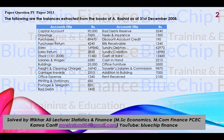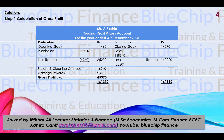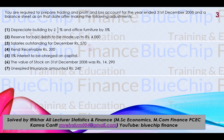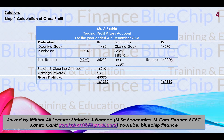Next, Purchases are placed on the debit side of the Trading Account. If there are any returns, purchase returns are subtracted from purchases — for example, from 89,470 you subtract the returns and the remaining amount goes into the Trading Account. Similarly, Sales are placed on the credit side of the Trading Account, and Sales Returns are also subtracted from Sales before placing them there.